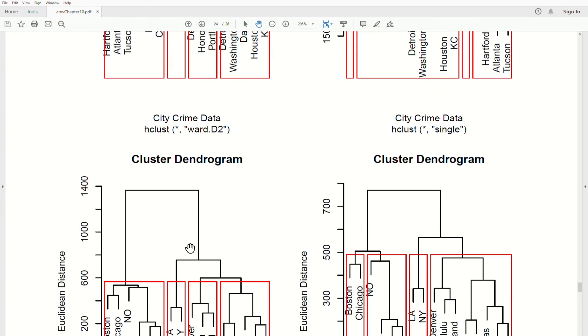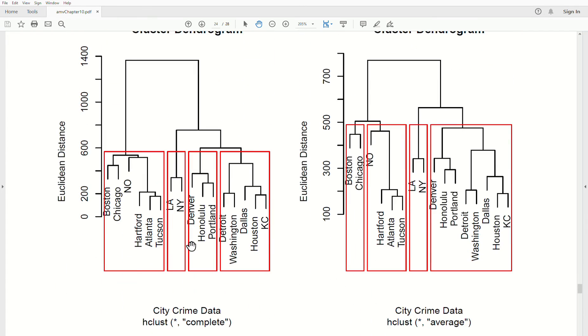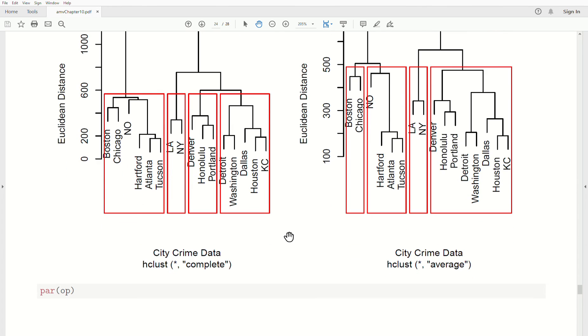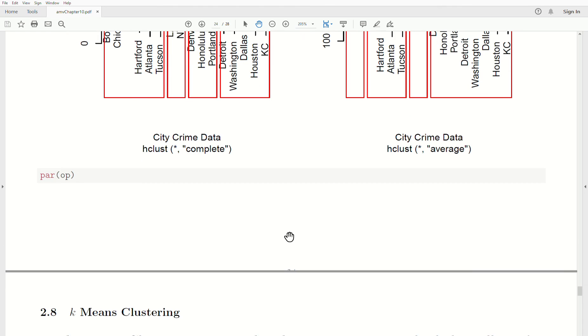Then if we look at the clustering from the complete linkage, which is the farthest neighbor and the average linkage, there's some similarities like LA and New York are clustered together, but the other clusters are a little bit different.